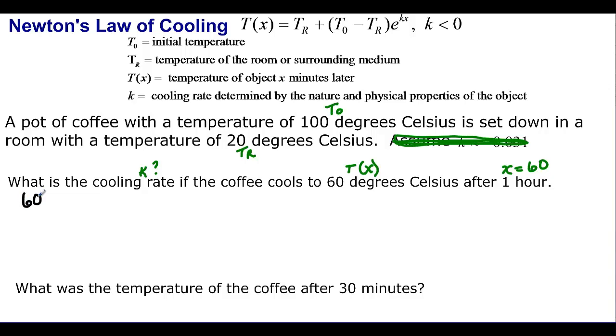So let's put in what we know. T of X is 60 equal to T of R, which we said was 20, plus the difference between temperature and the room. So 100 minus 20 times E to the K times 60 because it has to be 60 minutes.